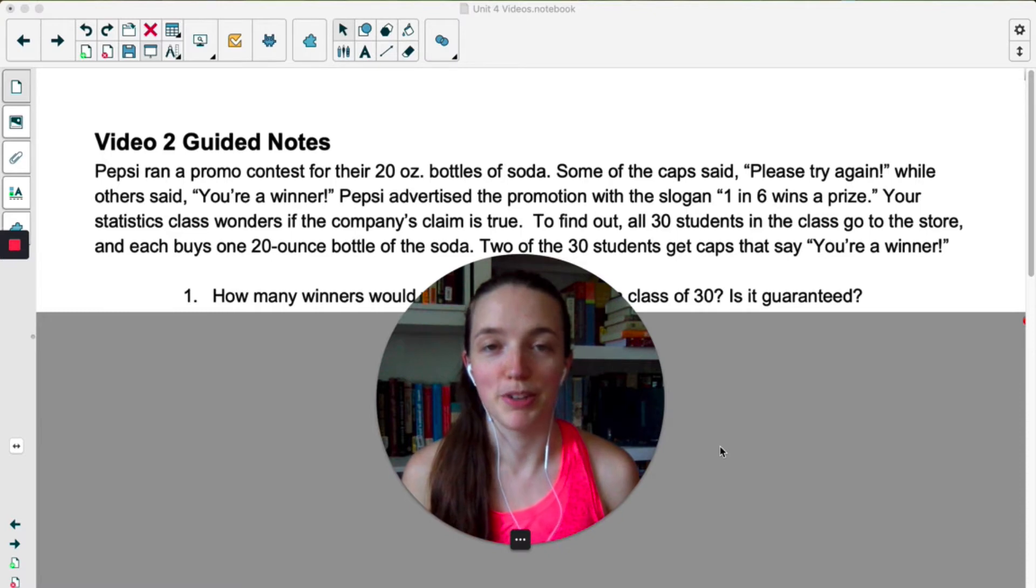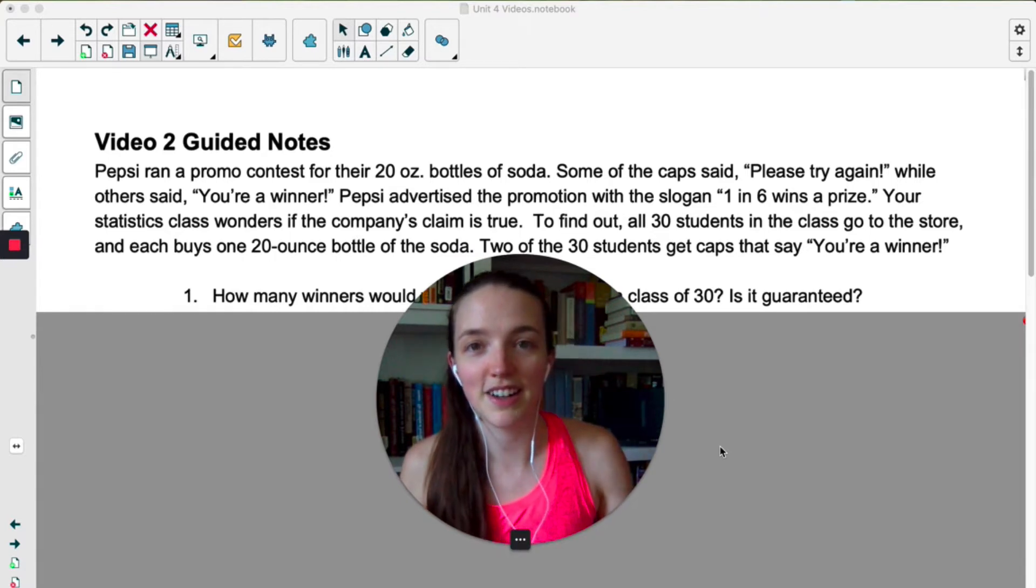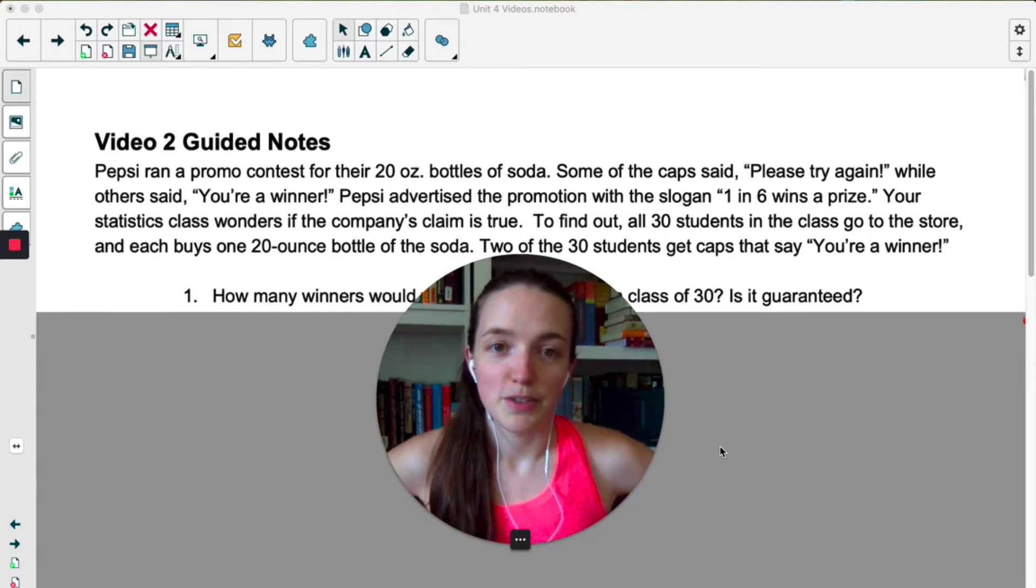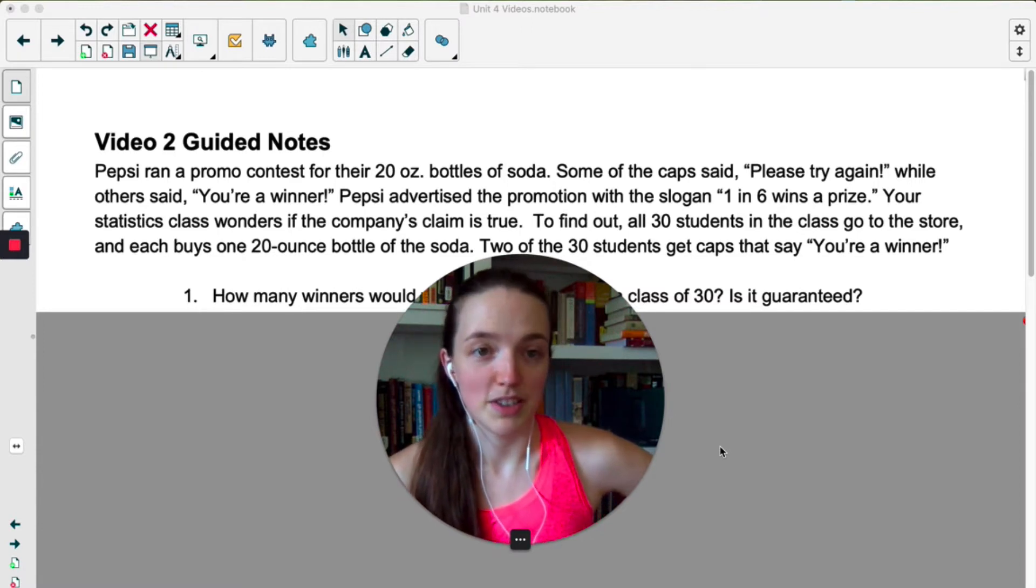There are many ways to answer probability questions, and the first one we're going to examine is called a simulation. The example we're going to use involves a promo contest hosted by Pepsi where some of the caps of their 20 ounce bottles said please try again and others said you're a winner.